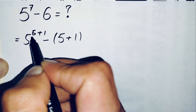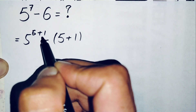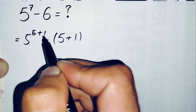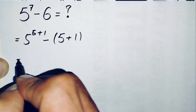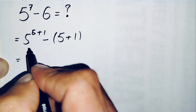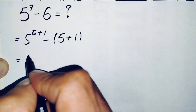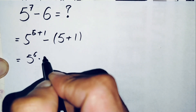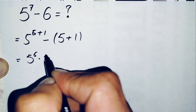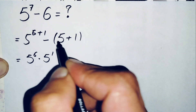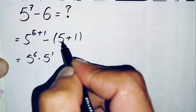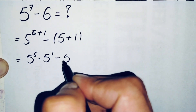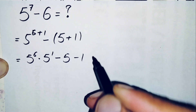We use the exponential math property: a raised to power (m+n) equals a raised to power m times a raised to power n. Using that property, this becomes 5 raised to power 6 times 5 raised to power 1, and we multiply the negative sign inside the parentheses to get minus 5 minus 1.